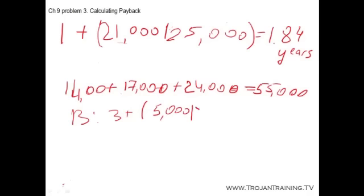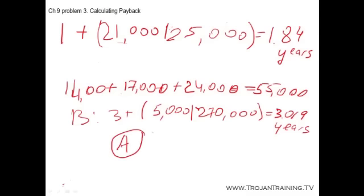And the last total is 270,000. So the payback period for Project B is a little over three years. Now using the payback criterion and a cutoff of three years, we should accept Project A but not Project B because Project B's payback period is over three years. So for this problem, we're going to accept Project A and we're going to reject Project B.